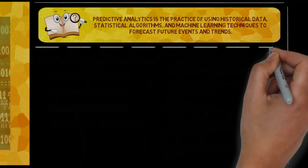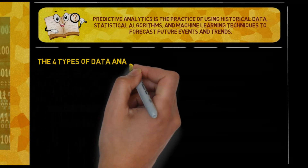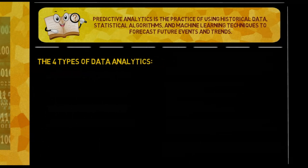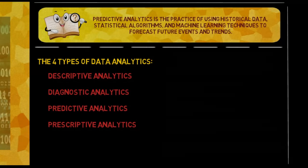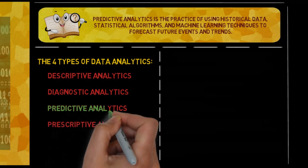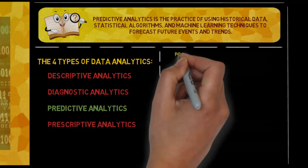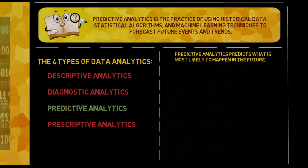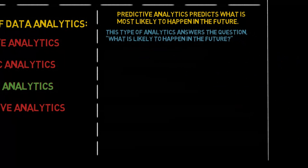The four types of data analytics are: descriptive analytics, diagnostic analytics, predictive analytics, and prescriptive analytics. Predictive analytics predicts what is most likely to happen in the future. This type of analytics answers the question: what is likely to happen in the future?